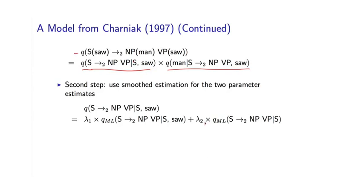In this example, I'm going to use linear interpolation. We're going to have two parameters, lambda 1 and lambda 2, greater than or equal to 0, and lambda 1 plus lambda 2 equals 1.